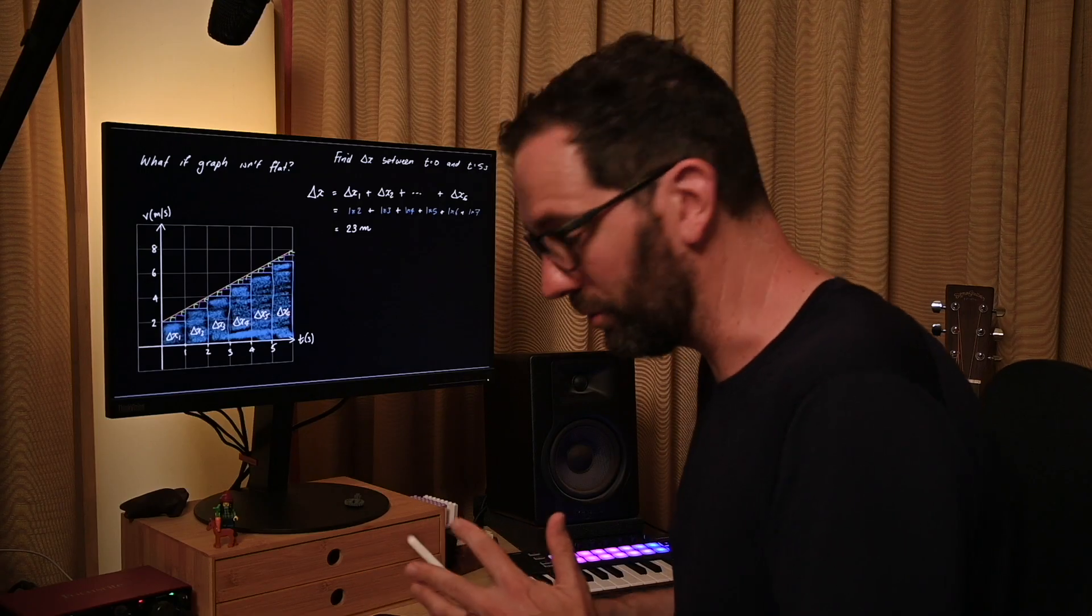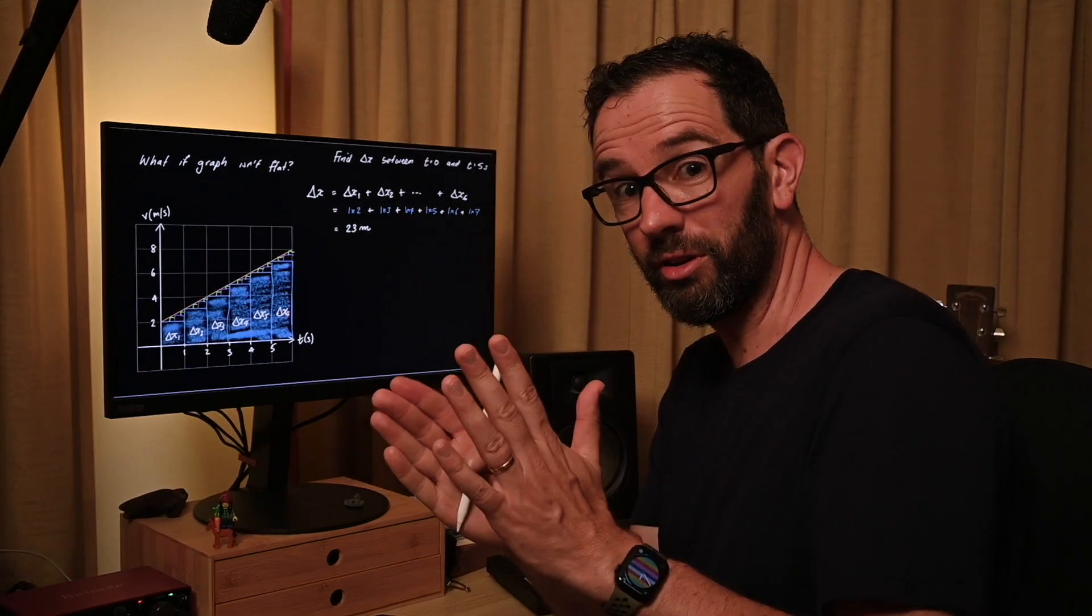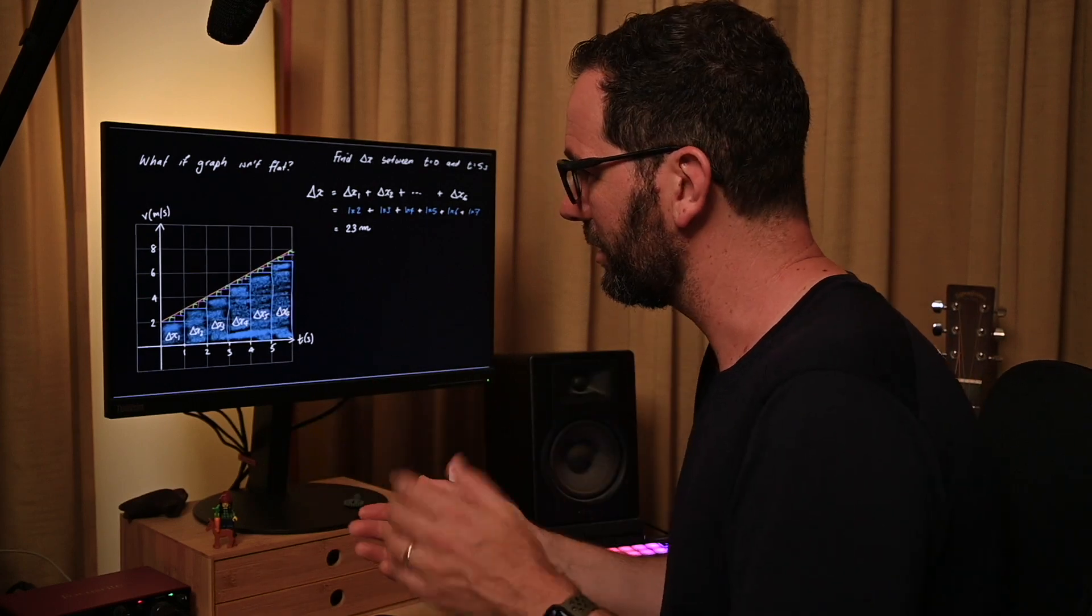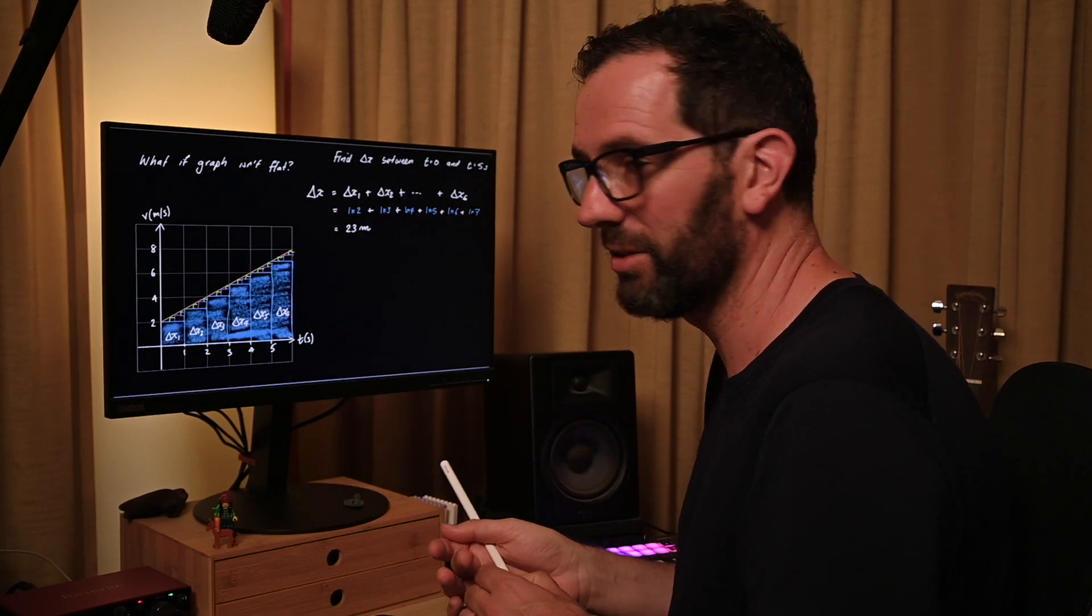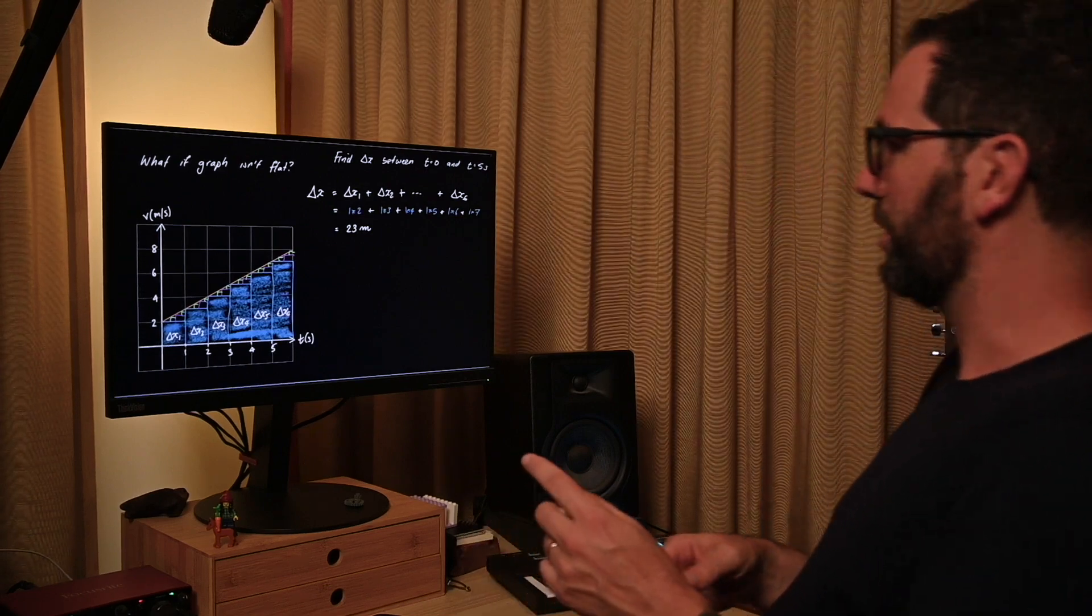Then what we're really calculating is just the area underneath this graph. We imagine the rectangles are getting really small and we're getting a lot of them. That area is basically the area underneath my graph.